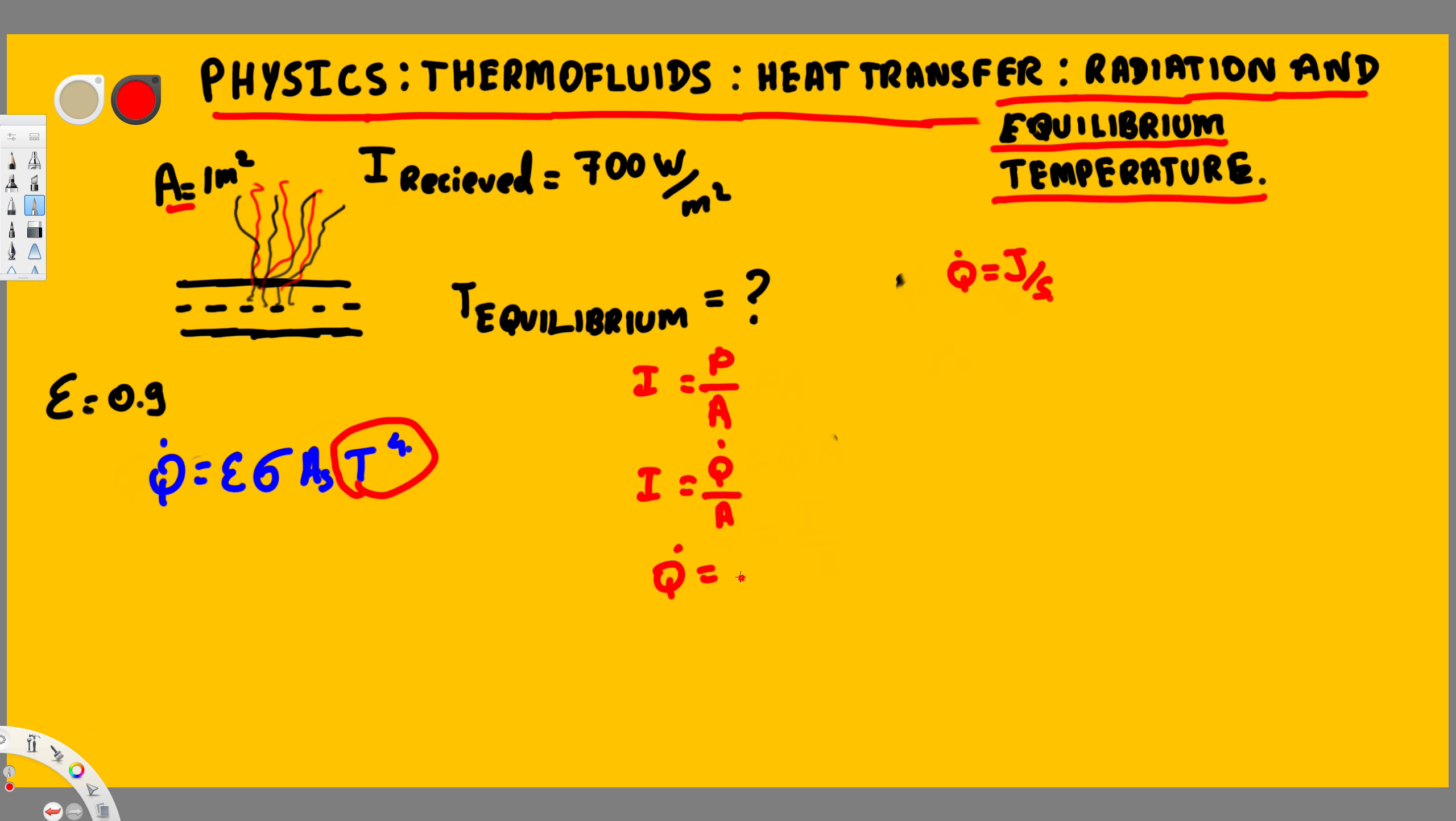Here we are trying to find Q dot. Q dot is going to be equivalent to intensity times area. Intensity is given by 700 watts per meter square and we are only taking 1 meter square of the road, so 1 meter square is going to be the area. If you calculate this, that's going to give you 700 watts, and this is the value we are going to use right here.